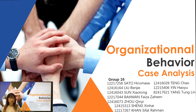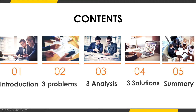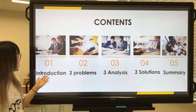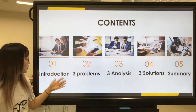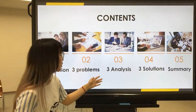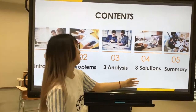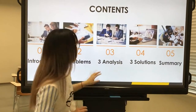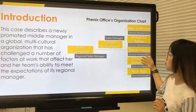We are group 16 and today we will do a presentation about organizational behavior case analysis. First, we will do a brief introduction about this case to introduce its background. Second, we will identify the problems, then do the analysis, and finally present our solutions. At last, we will do a brief conclusion about this case analysis. Here is the Phoenix office organization chart.